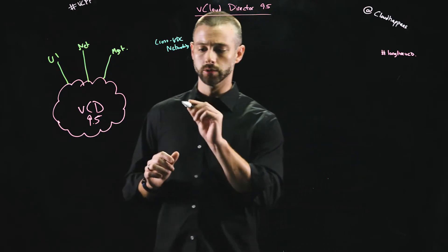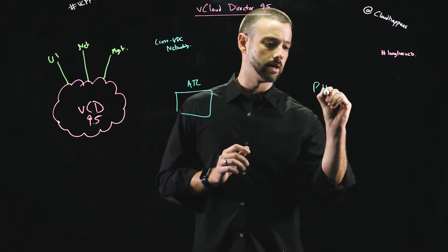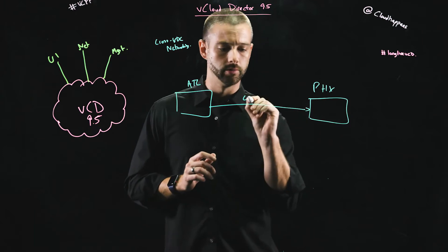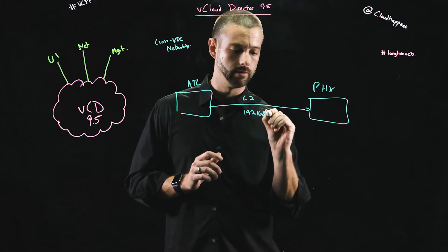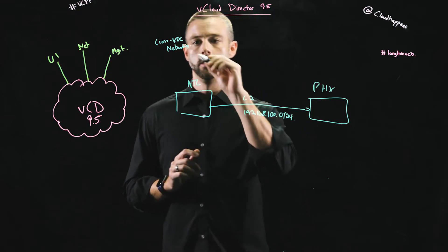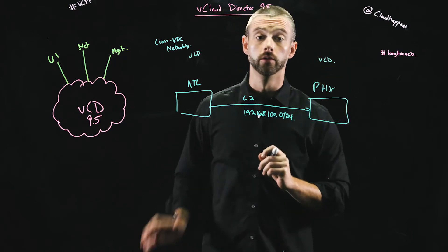Taking these virtual resources that I may have at, let's say, Atlanta, my Phoenix site, and I want to add in this L2 network 192.168.100.0/24. But this is all orchestrated through vCloud Director through the tenant UI.